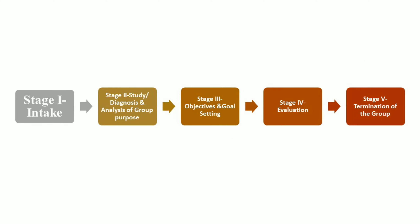Though there are many stages and phases in group development, social group work generally follows a similar pattern: Stage 1 — intake; Stage 2 — study or diagnosis and analysis of group purpose; Stage 3 — objectives and goal setting; Stage 4 — evaluation; and the last stage — termination of the group.